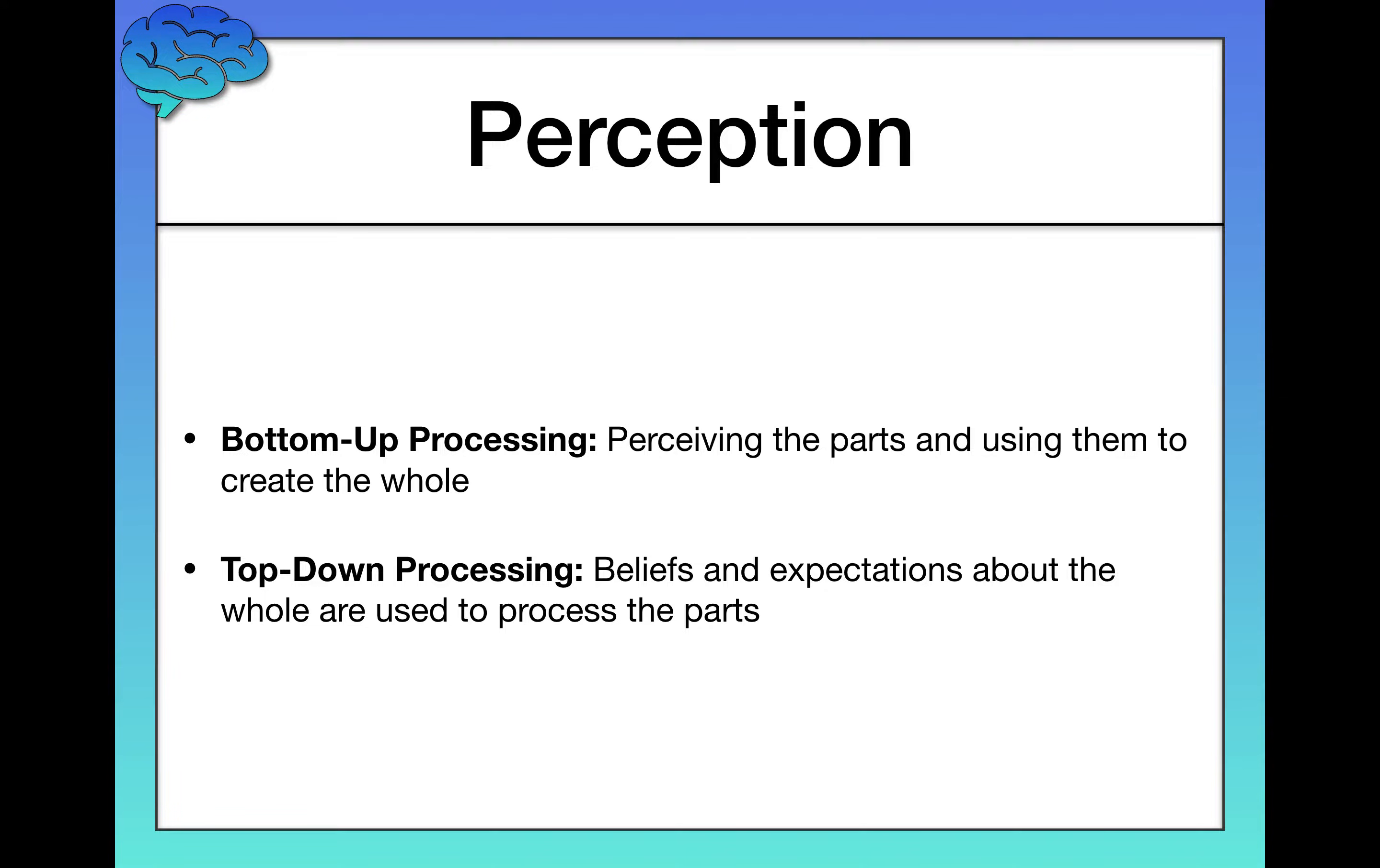Top-down processing works the opposite way. This is where you have beliefs and expectations about what you're perceiving to begin with, and those beliefs and expectations guide your interpretation of the parts, of the sensory information that you're given.